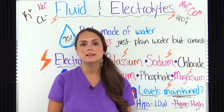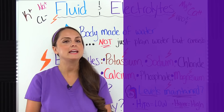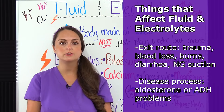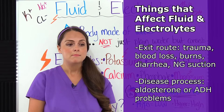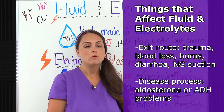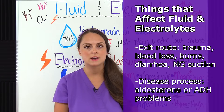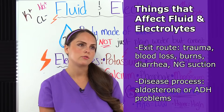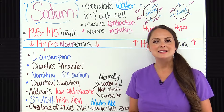Other ways electrolytes can be affected is if there is an exit route for them — this could be trauma, a lot of blood loss, burns, or a patient who's very sick and vomiting a lot or has diarrhea. Maybe they have NG suction, sucking off too much gastric juice which is rich in many electrolytes. Or the patient has some type of disease process, like problems with aldosterone or ADH — the antidiuretic hormone.